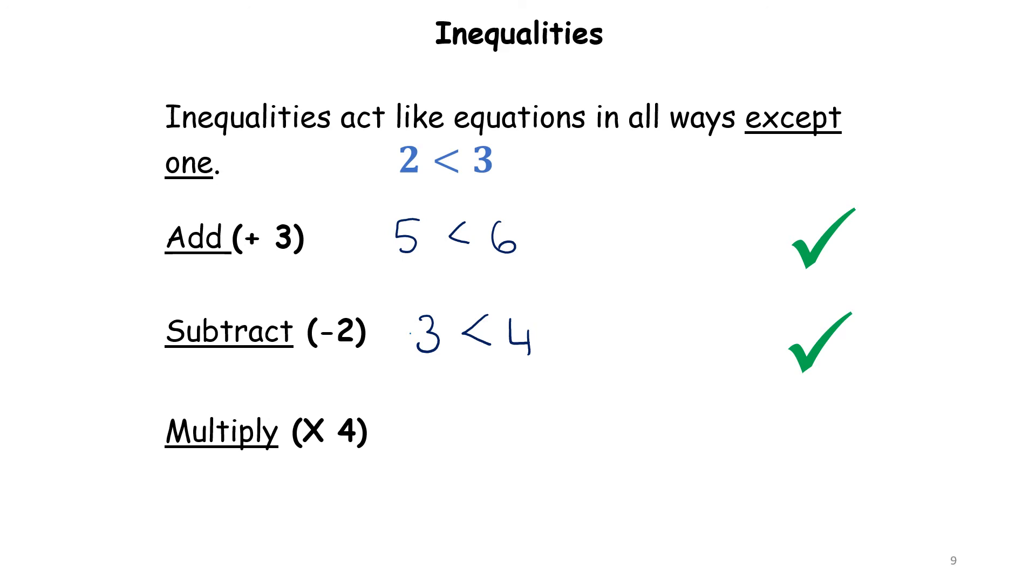What about multiplying? Will this still be true when we multiply? Multiply by 4. 3 times 4 is 12, 4 times 4 is 16. Is 12 less than 16? Yeah it is. Perfect. Let's talk about division then. 12 divided by 2 gives me 6, 16 divided by 2 is 8. Is 6 less than 8? And the answer is yes. So it looks like an inequality pretty much acts like an equation. So what is that one exception?